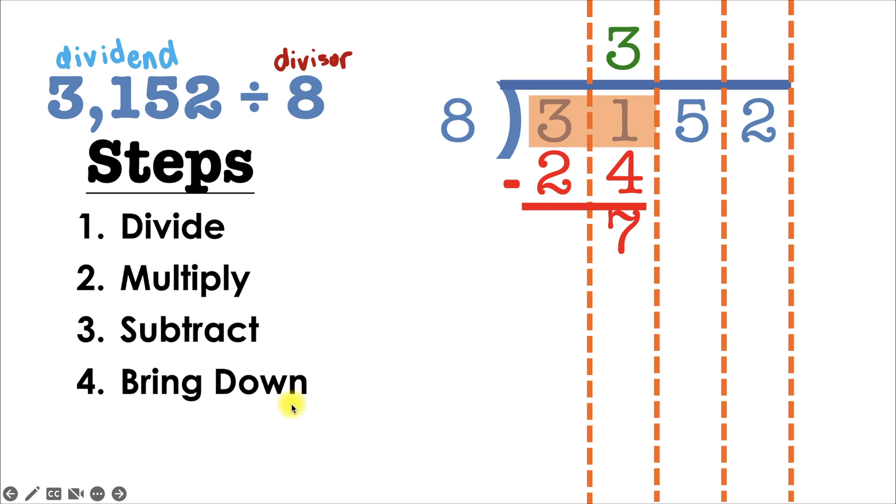Then we'll go to step 4, which is to bring down. But what exactly are we bringing down? Well, for that, we're going to need to look to the column to the right. Right now, we're here. And that means the column to the right is this column here, the 5. So this 5 has to get brought down next to the 7. That gives us the number 75. And that's where we're going to start repeating our process.